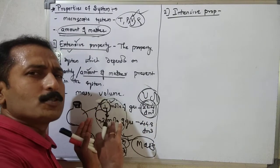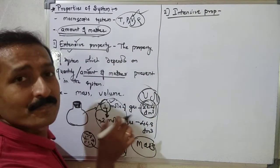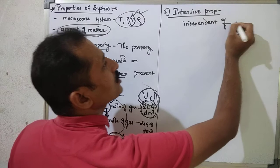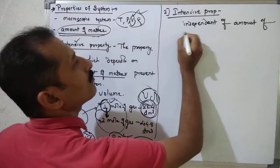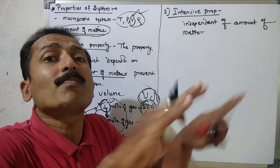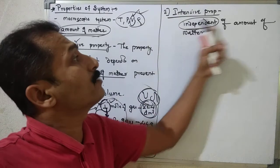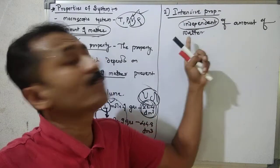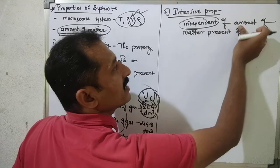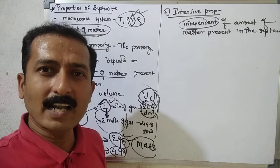That is totally opposite of extensive property. In the case of intensive property, it is the property of system which is independent of the amount of matter or quantity of matter present in the system. That is called intensive property.